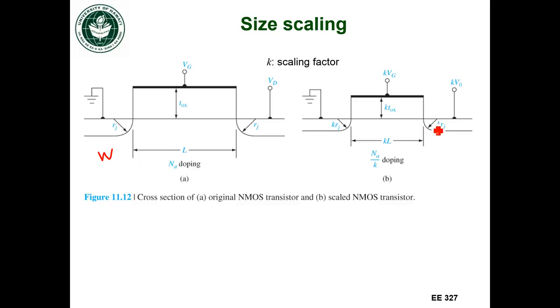Same with the oxide thickness, the depth of the drain and source wells, the length of the gate, the width of the gate would be now K times W, and doping concentration is going to be the Na divided by K.